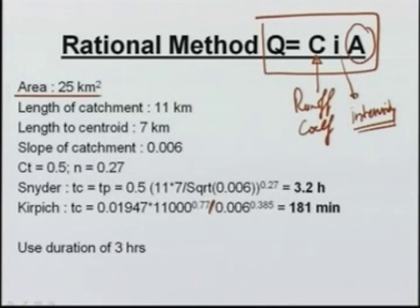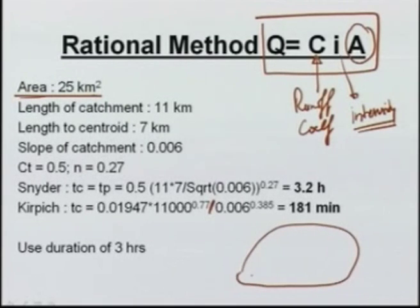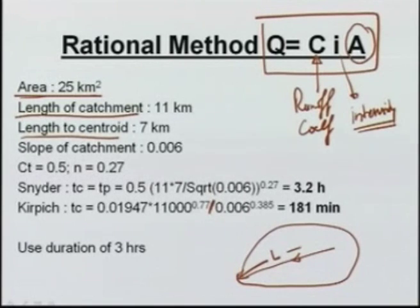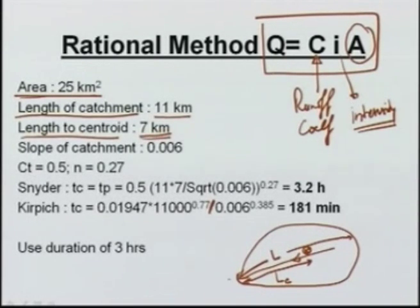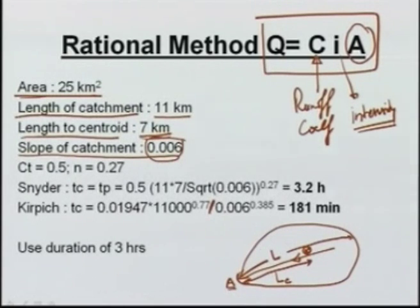Let us say we have a catchment with an area of 25 km². The other parameters given are the length and the length to centroid. The centroid of the area may be somewhere in the middle, and the point directly opposite that on the watercourse is written as L_c. The length of the catchment is given as 11 km, the length to centroid from the outlet point A is 7 km, and the slope of the catchment is 0.006, taken as the difference in elevation between the farthest point and the outlet divided by the length L.